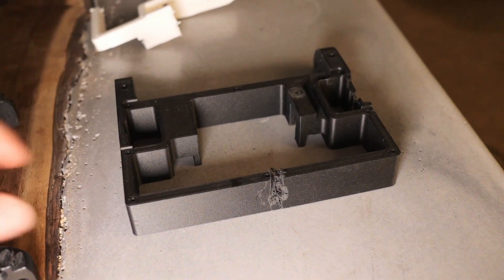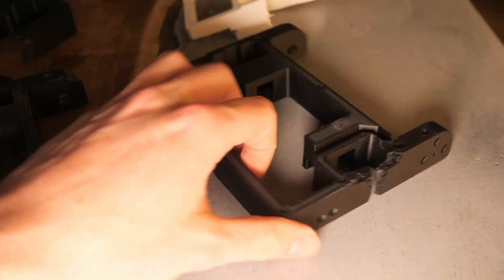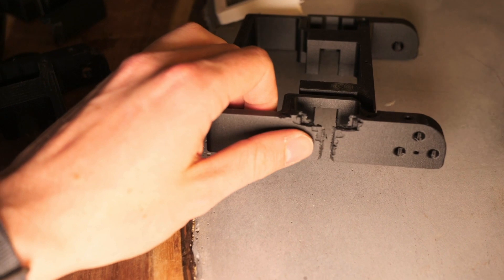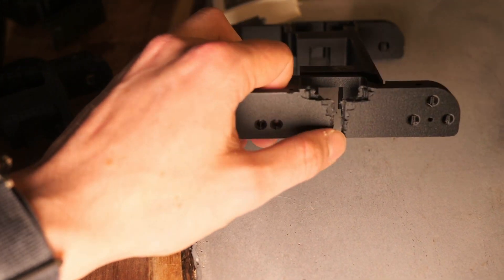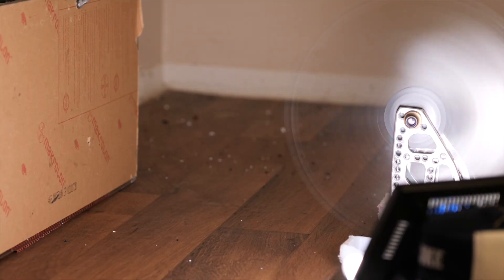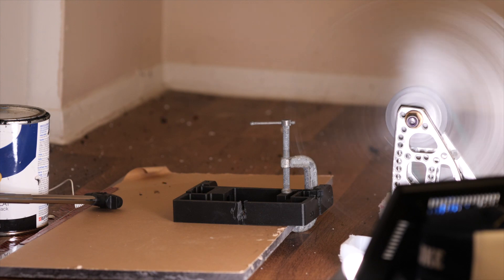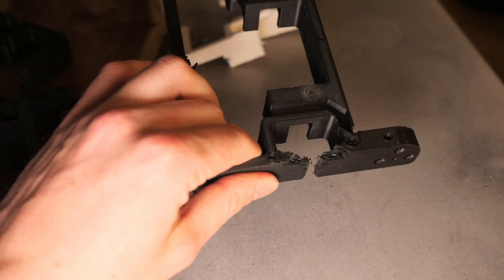Next we have the onyx part, which seemingly provided no resistance. I'll show that clip again. The blade just buzzed right through it. So interesting there.